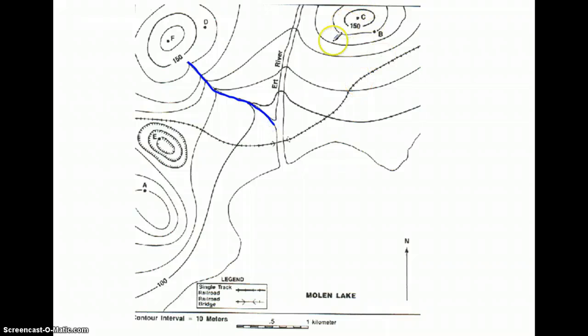The first way is by looking at the contour lines. When a contour line crosses a stream, the contour line bends and forms a V. This is significant because the tip of the V shows you where the water is coming from.